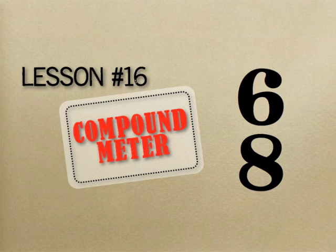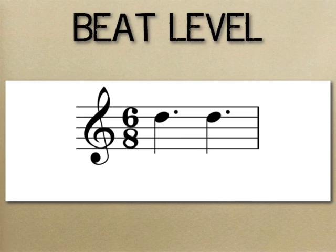We learned in Lesson 16 that 6/8 is a compound meter that has two beats in each measure. Since the beat in 6/8 is a dotted quarter note, we will count this measure as one, two. The beat in 6/8, or any compound meter, divides into three equal parts at the beat division level.